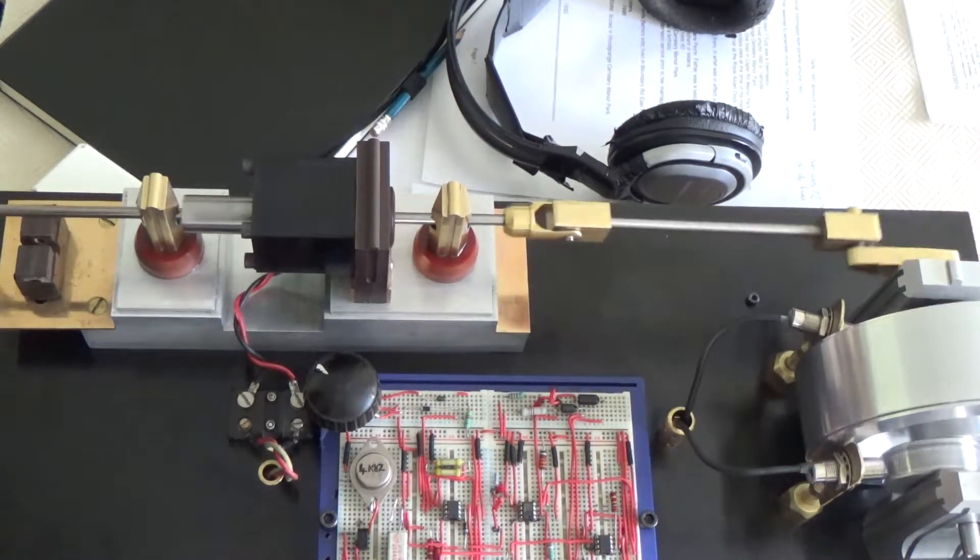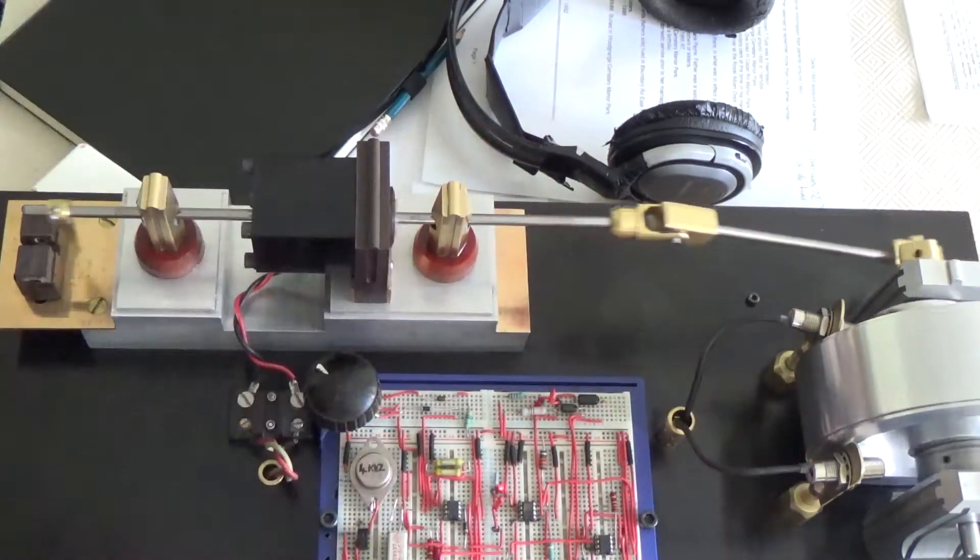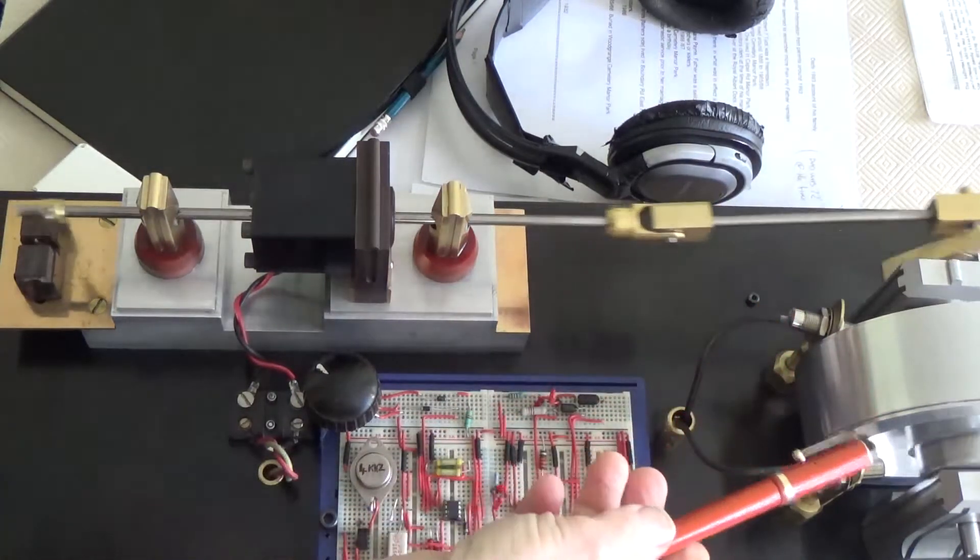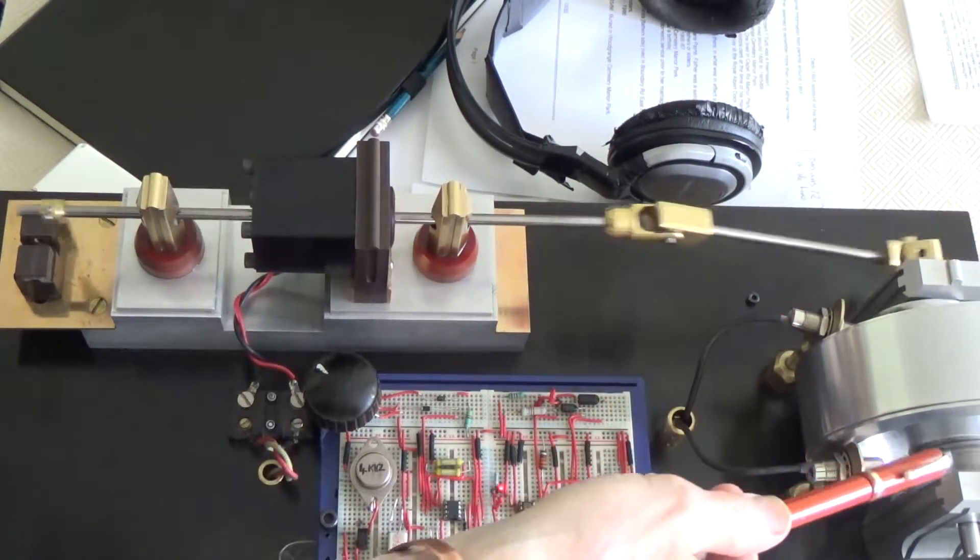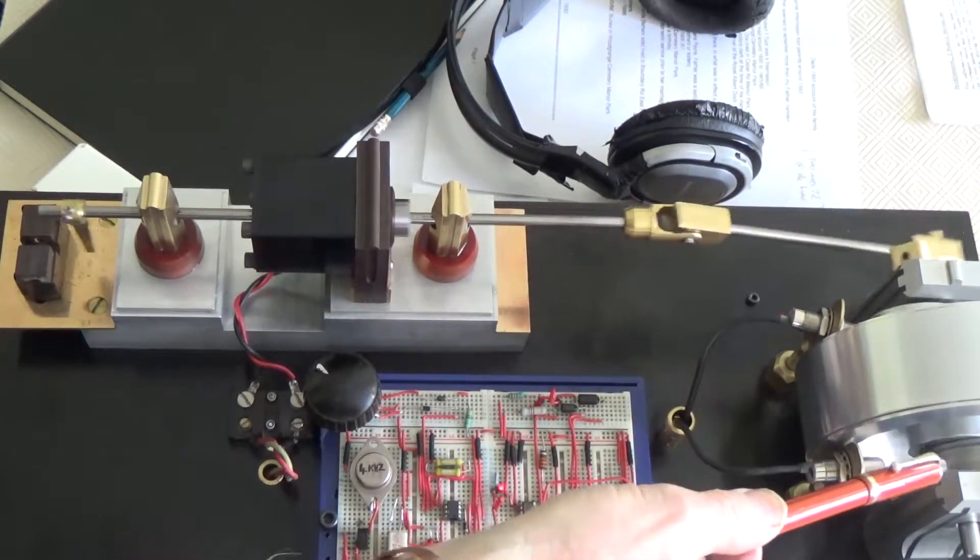There are three sensors involved in the operation of this thing. There's two Hall Effect sensors, one here, one there. They are operated by the two eccentric cams either side, which have got neodymium magnets embedded in them.